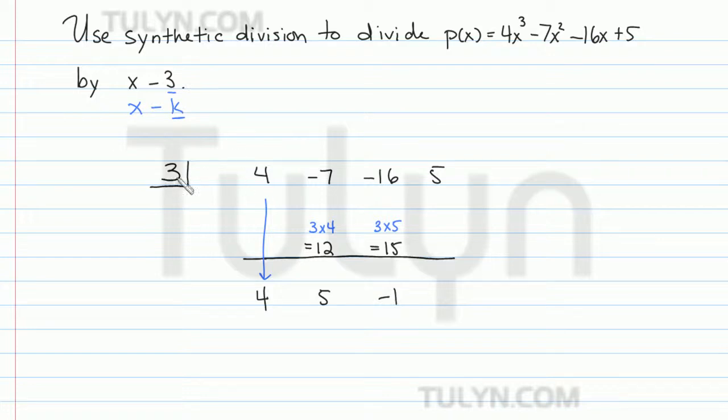And then we do it one more time. So 3 times negative 1 is going to be negative 3. And when we add these two together, we're going to get positive 2.